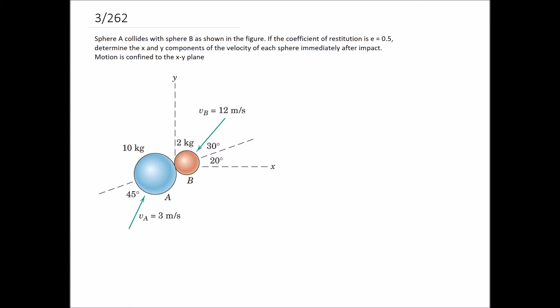For this question we're looking at an impact, and just by looking at it you can see that it's going to be an oblique impact rather than a direct central impact. For a direct central impact, both velocity vectors would need to be in line with each other so that the centers of the balls collide in line. But here you can see they're offset slightly, so it's going to be the oblique case.